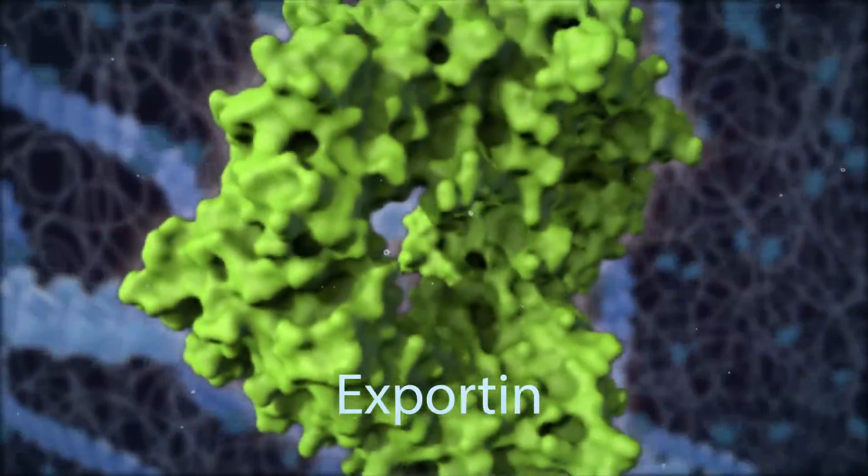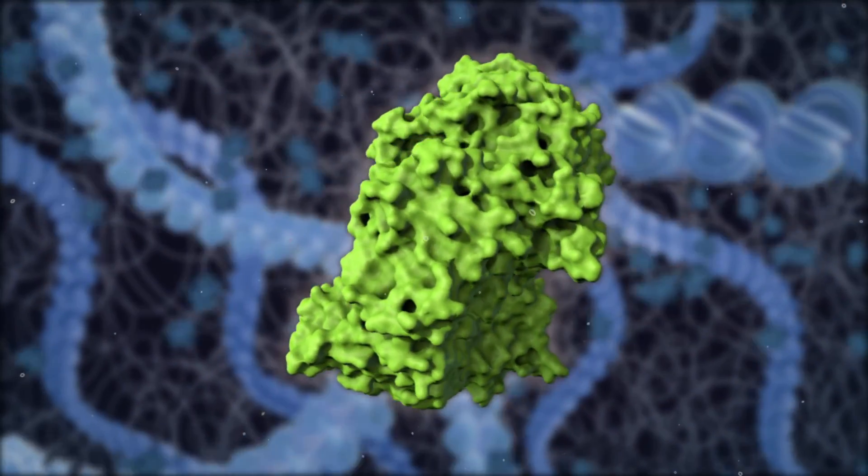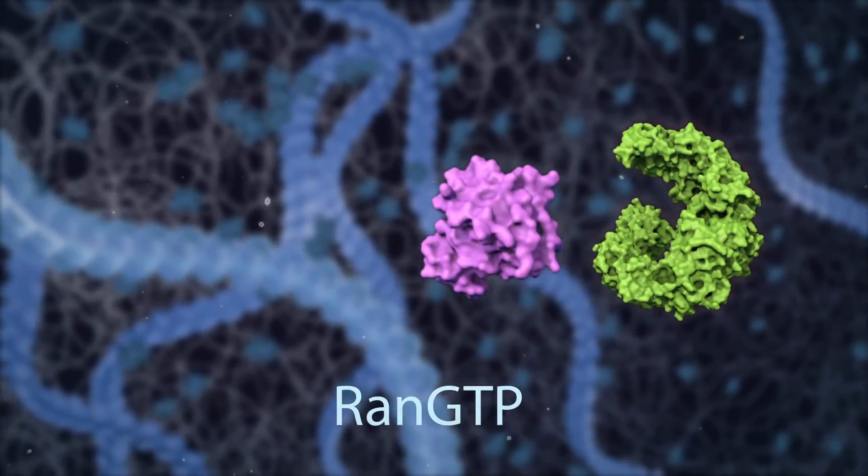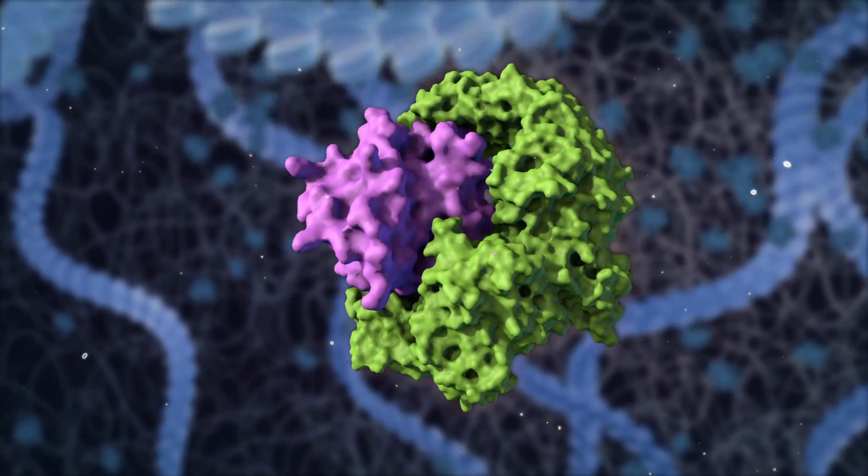Exportin is a protein located inside the cell nucleus that mediates transport of material from the nucleus to the cytosol. Exportin attaches to RAN-GTP, increasing exportin's affinity for the nuclear export signal.